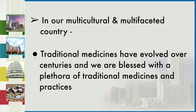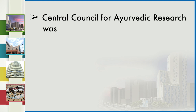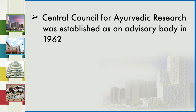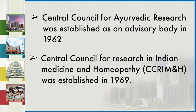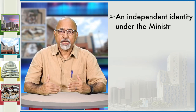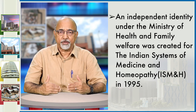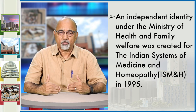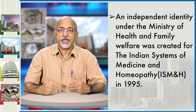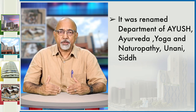The Central Council of Ayurveda Research was established as an advisory body in 1962. The Central Council for Research in Indian Medicine and Homeopathy (CCRIM&H) was established in 1969. An independent identity under the Ministry of Health and Family Welfare was created for the Indian Systems of Medicines and Homeopathy (ISM&H) in 1995.